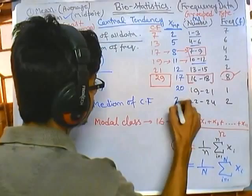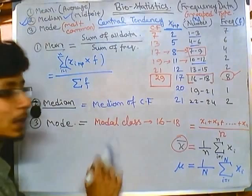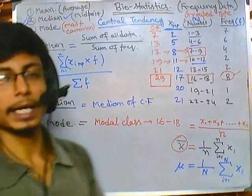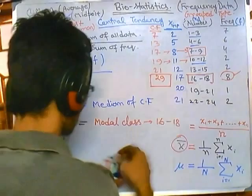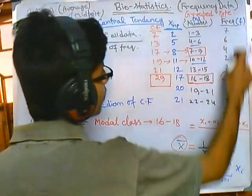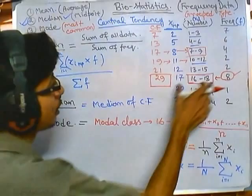We have all these values we need. To find the mode, we first need to identify the modal class. The modal class is simply the class having the highest frequency. Looking at the frequency table, the class with the highest frequency is 16 to 18, so we call this the modal class.